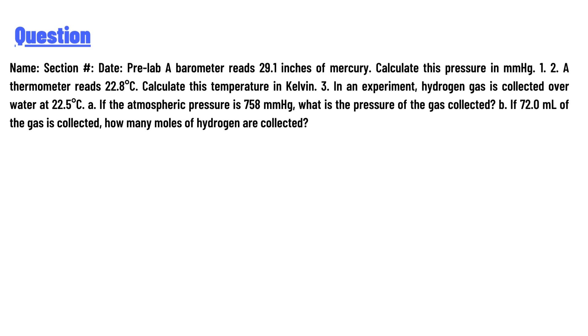Question 3: In an experiment, hydrogen gas is collected over water at 22.5°C. (a) If the atmospheric pressure is 758 mmHg, what is the pressure of the gas collected? (b) If 72.0 mL of gas is collected, how many moles of hydrogen are collected?